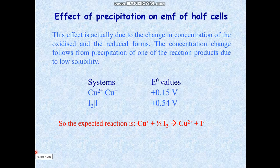Hello everyone. Today's topic is the effect of precipitation on the EMF of half cells. Earlier we discussed the effect of pH in two cases and also the effect of complex formation on the EMF of half cell reactions. Today's topic is the effect of change in concentration due to precipitation on EMF. This effect is due to the change in concentration of the oxidized and reduced forms — the oxidant and reductant concentrations.